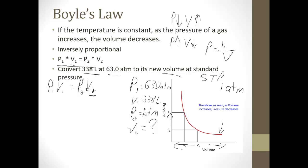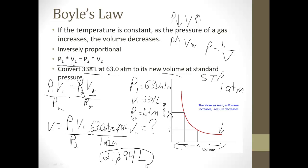We want to get the V2 by itself right up front. So if we divide each side by P2, it cancels out here. We end up with V2 equals P1V1 divided by P2. And now we're ready to plug in numbers. 63.0 atm times V1, 338 liters, divided by P2, 1 atmosphere. So our atmospheres cancel. We end up with 63 times 338, and we are going to end up with 21,294 liters. Nice and easy.